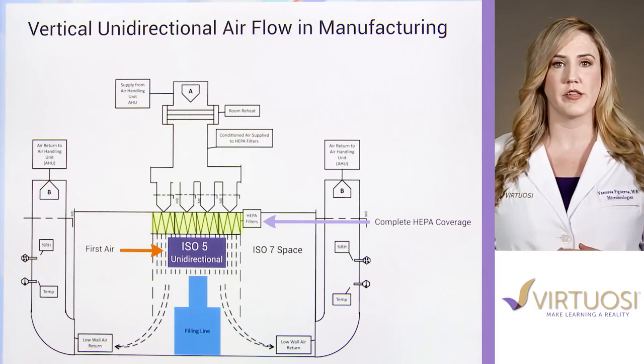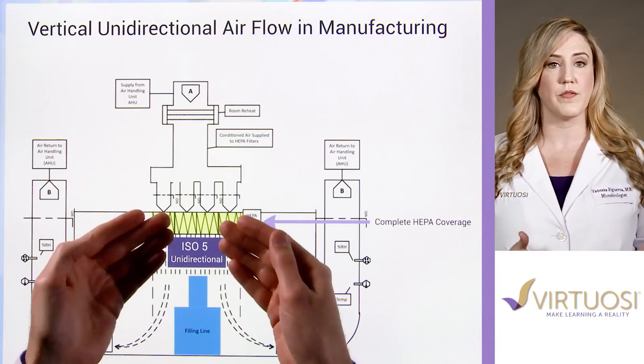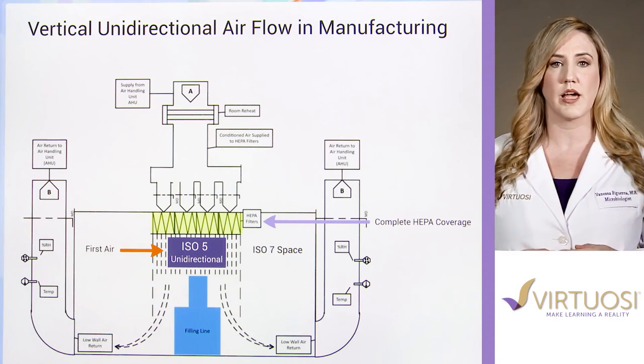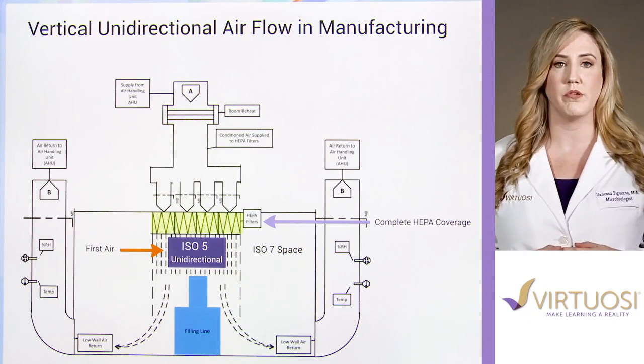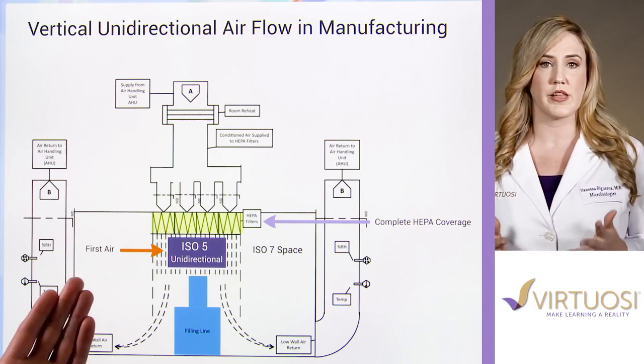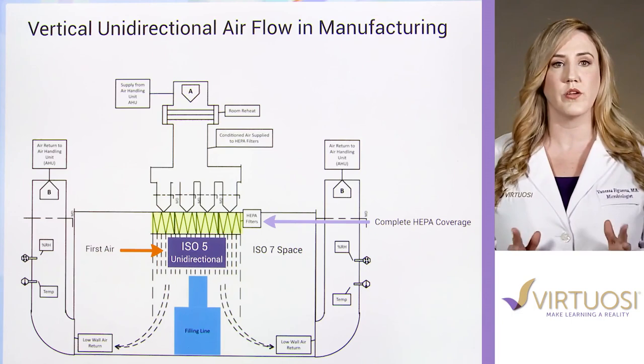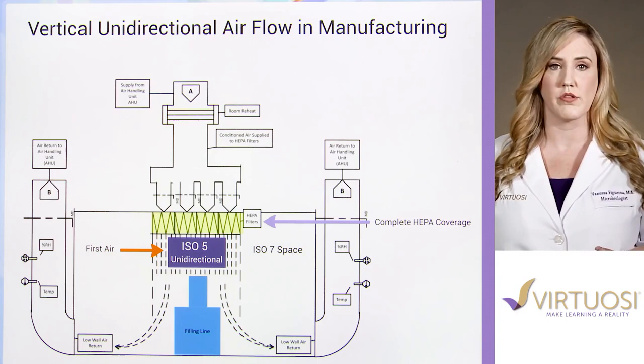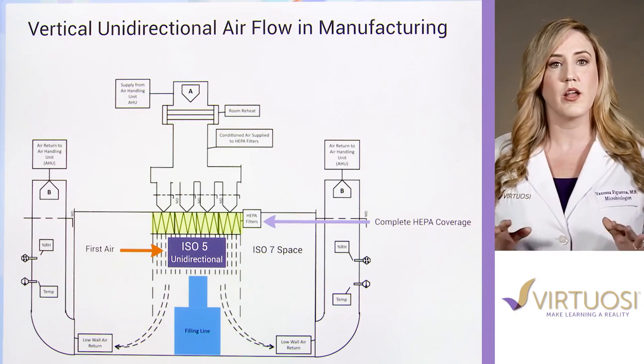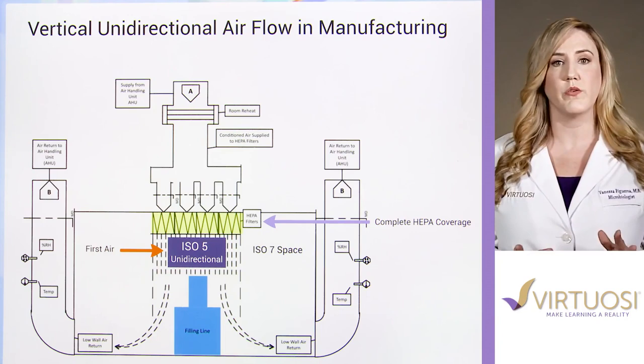Unidirectional airflow is used in critical areas such as ISO 5 or in laboratory testing hoods where the first air that comes into contact with open product, open containers, container closures, or product samples is required to be of the highest purity possible. The principle of first air is one of the most basic principles in aseptic technique. This principle states that humans interacting in the environment should never disrupt the unidirectional airflow over open containers, product contact components, or samples.